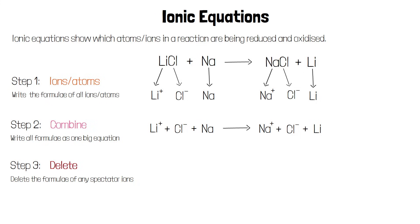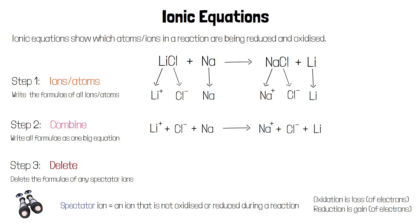The last step is to delete the formulae of any spectator ions or atoms. Spectator ions are ions that simply watch the reaction without really taking part themselves. They're ions that have not been either oxidized or reduced during a reaction. Because oxidation is the loss of electrons and reduction is the gain of electrons, that means they have not lost or gained any electrons so their charge will not have changed.